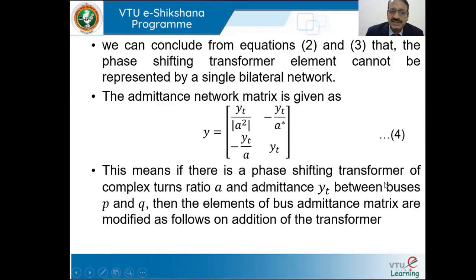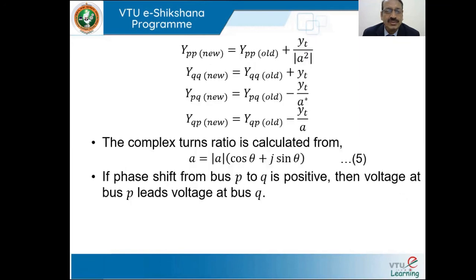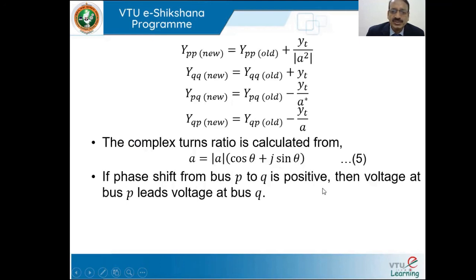Since IPQ and IQP are not equal, the phase shifting transformer cannot be represented by a single bilateral network. The admittance matrix element Y for the transformer is: Y11 = YT/A², Y12 = −YT/A*, Y21 = −YT/A, Y22 = YT. For a phase shifting transformer of complex turns ratio A and admittance YT between buses P and Q, the bus admittance matrix elements are updated as: YPP_new = YPP_old + YT/A², YQQ_new = YQQ_old + YT, YPQ_new = YPQ_old − YT/A*, YQP_new = YQP_old − YT/A. If the phase shift from bus P to Q is positive, the voltage at bus P leads the voltage at bus Q.